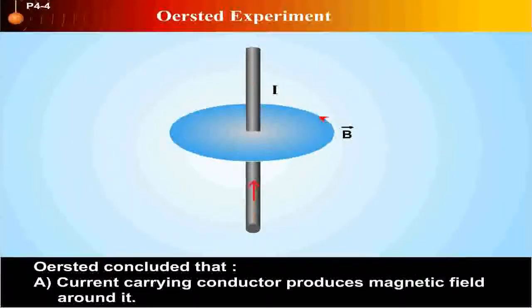Oersted concluded that: A. Current carrying conductor produces magnetic field around it.